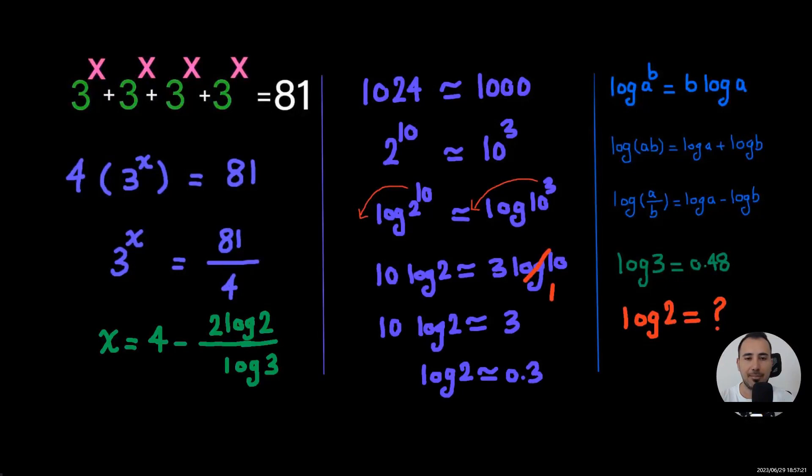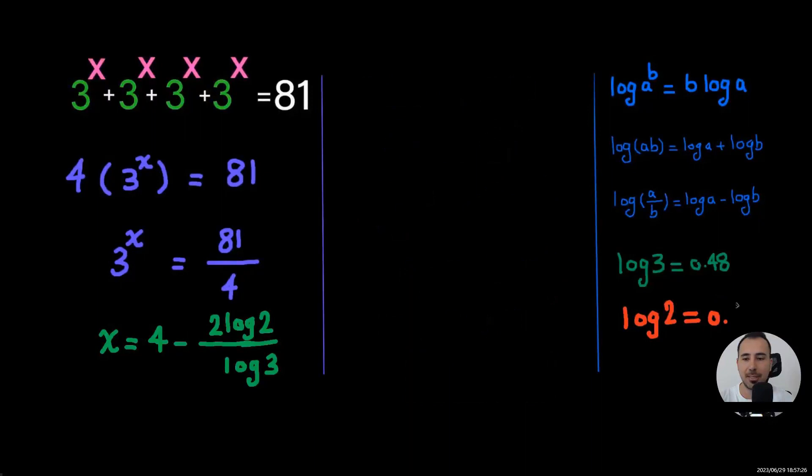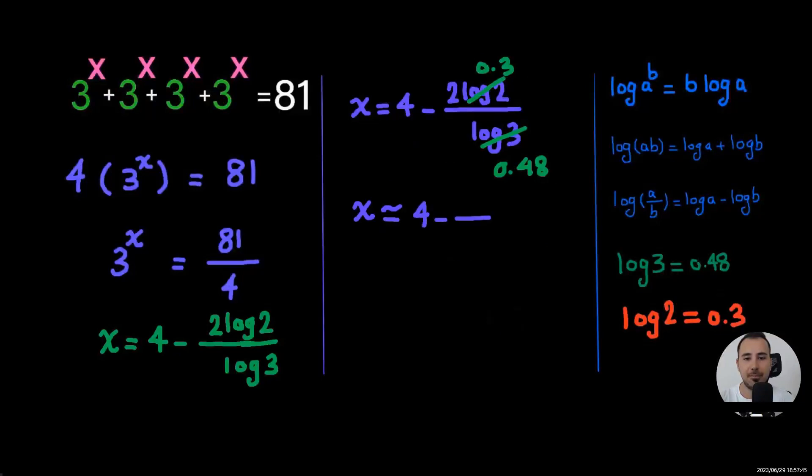Now all we have to do is just to plug in the values that we found into the main solution. Log 2 is 0.3, log 3 is 0.48. Now we just have to simplify.